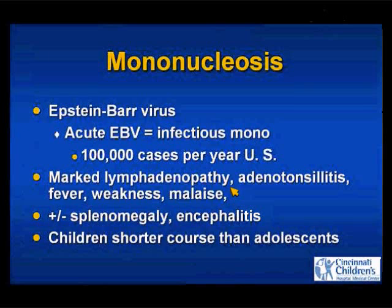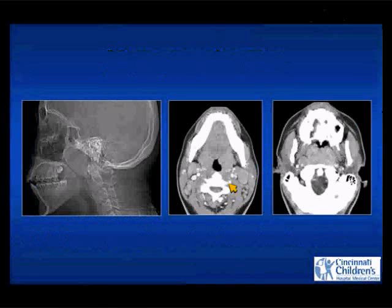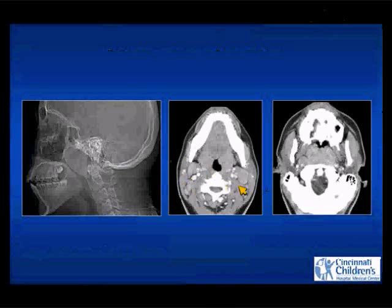Typically the children have a shorter course than the adolescents. This is another patient with the exact same imaging findings — huge adenoids, totally or nearly obliterating the nasopharyngeal and oropharyngeal airway. Thank goodness we didn't have to sedate this child. Large palatine tonsils, cervical adenopathy, diffuse bilateral symmetric enlargement of the adenoids, with a lateral retropharyngeal lymph node.